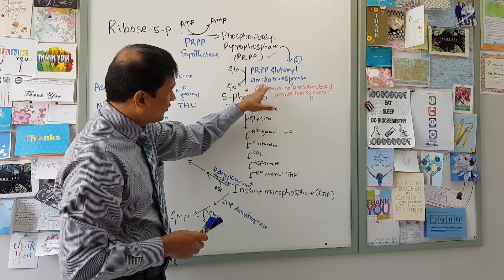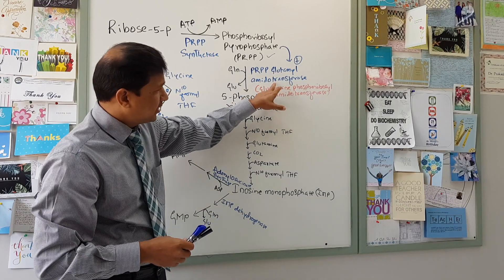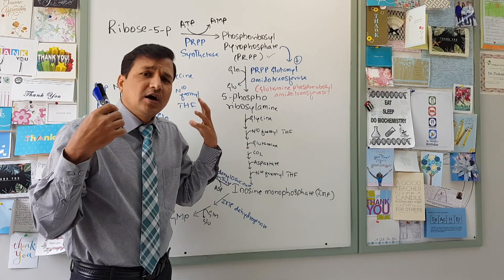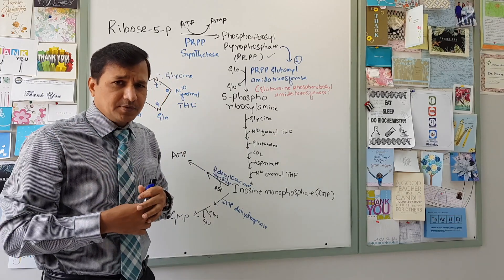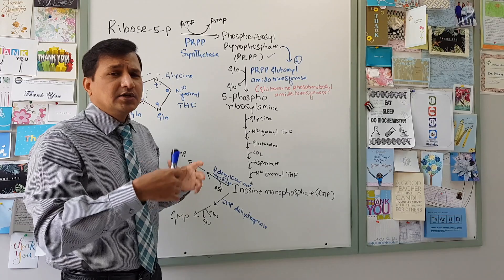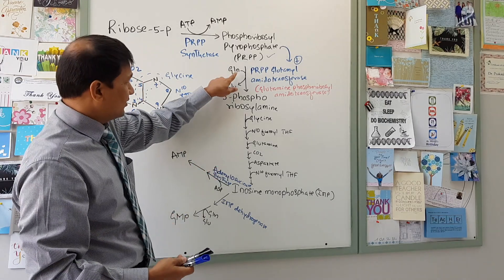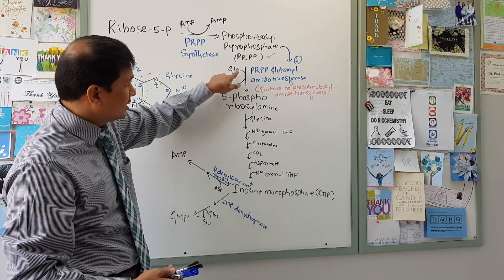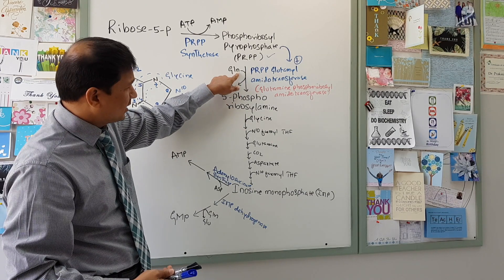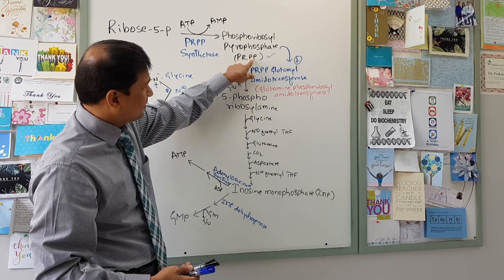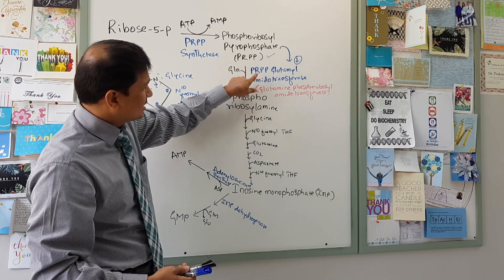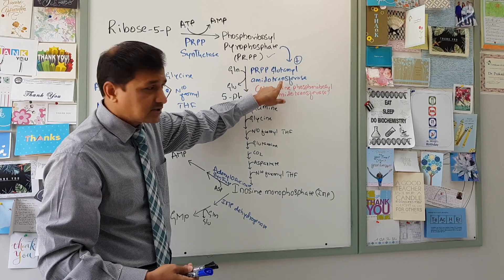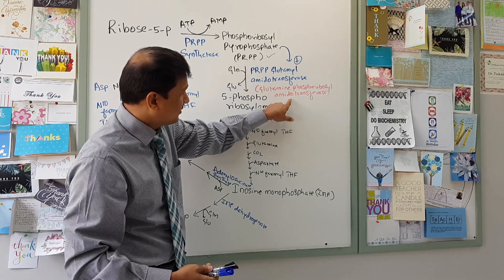Look for the term 'amidotransferase' here — amidotransferases transfer a side-chain amino group, usually from glutamine, to an organic molecule. That is why you can see glutamine entering the reaction and glutamate going out. The side-chain amino group of glutamine is transferred to PRPP, which is why the enzyme is called PRPP glutamyl amidotransferase or glutamine phosphoribosyl amidotransferase.